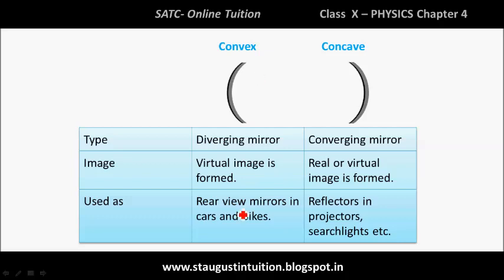Convex mirrors are used on the side of cars. Concave mirrors are used in reflectors, projectors, searchlights, torches, etc. Today we are only focused on understanding the difference between convex and concave mirrors and what they are.